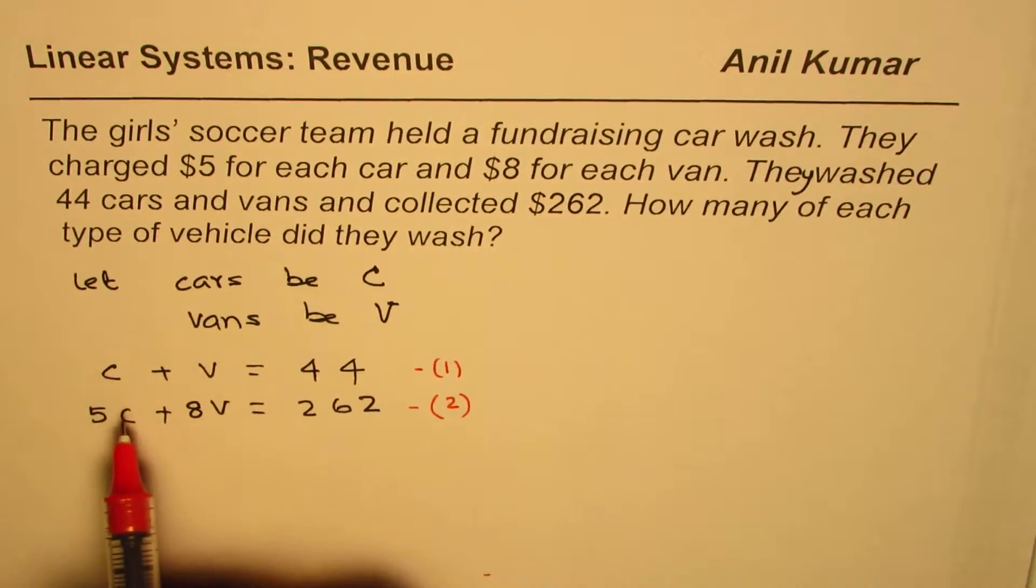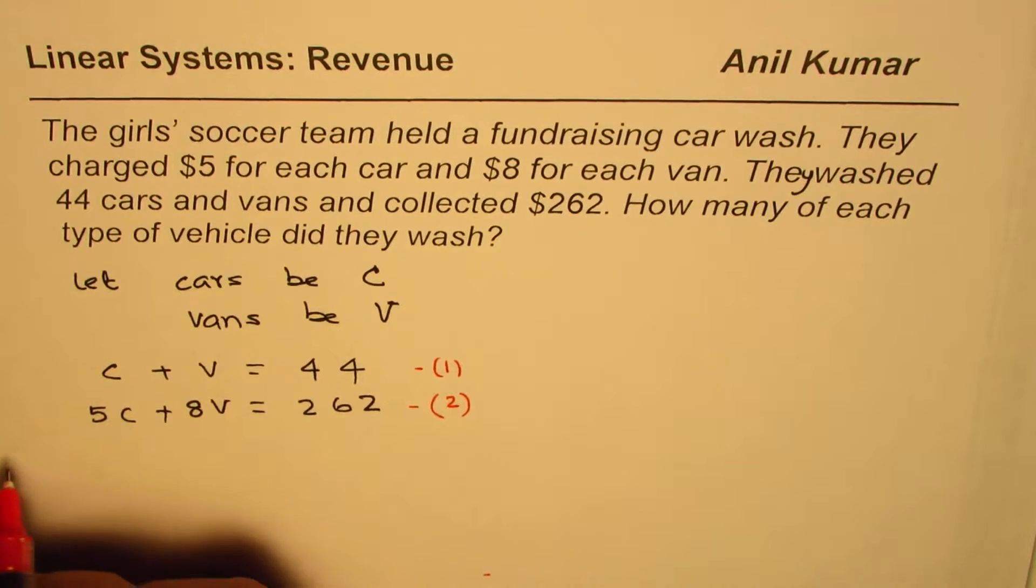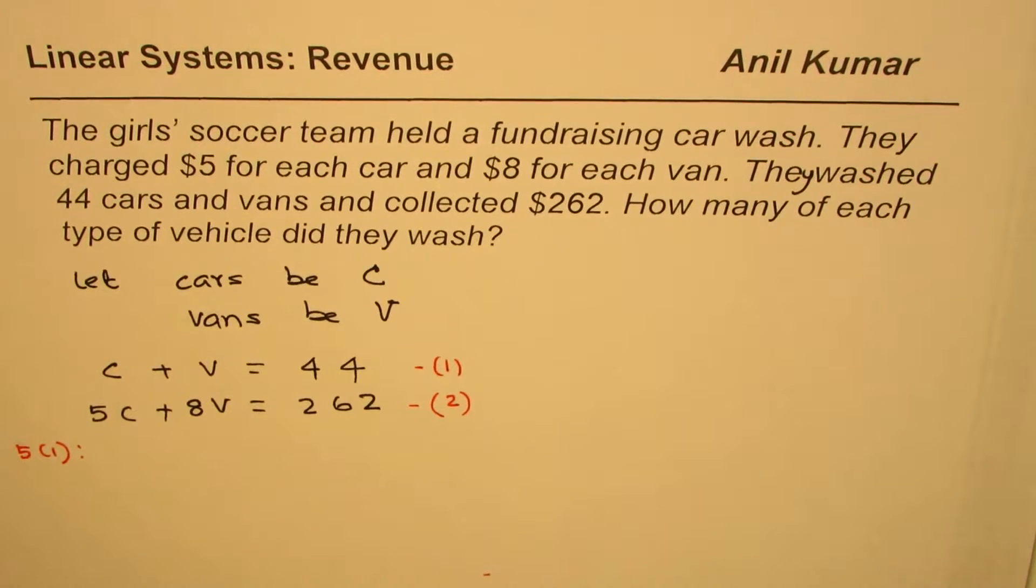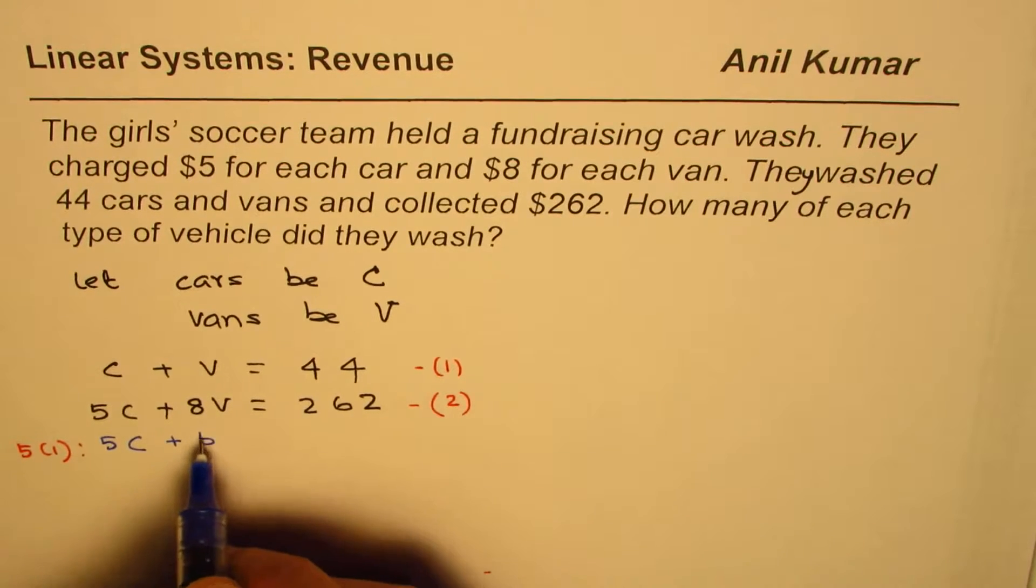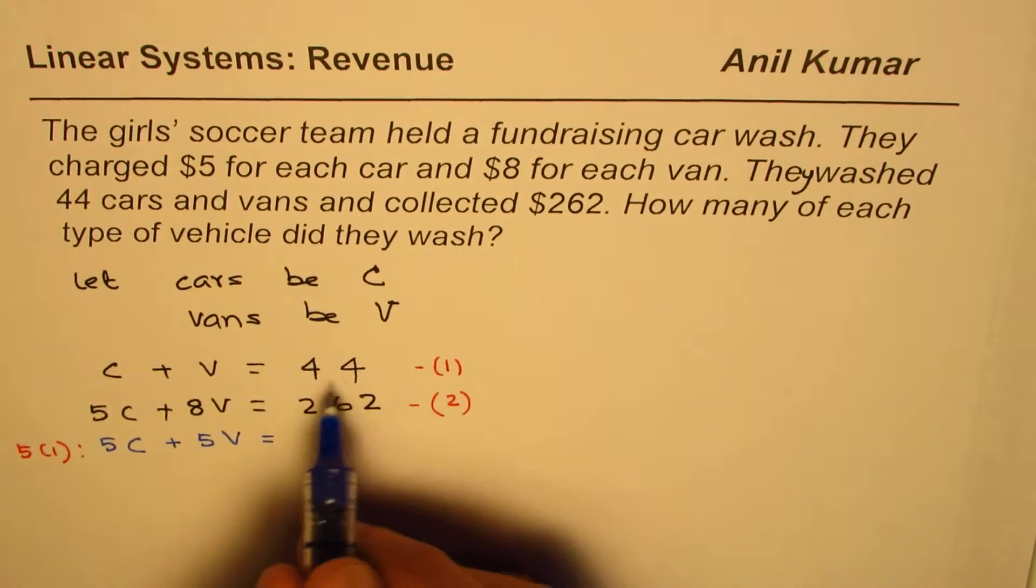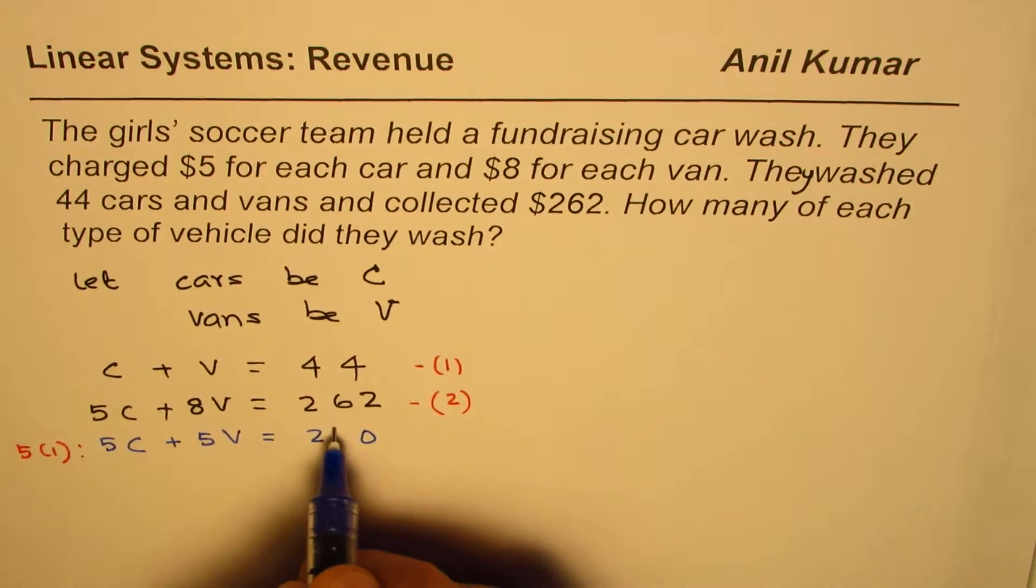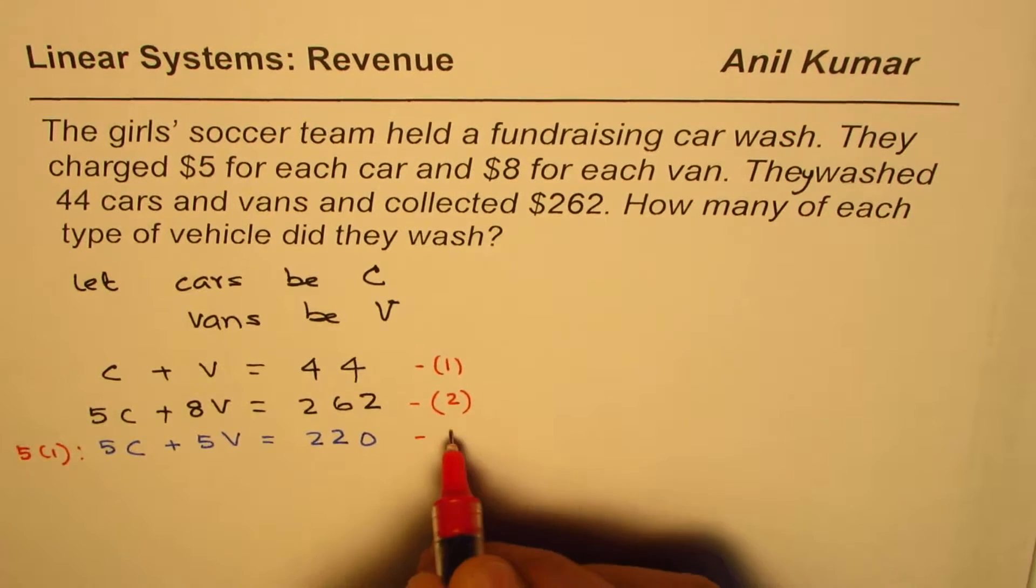To eliminate, let's make the coefficients of C the same. Multiply the first equation by 5, and we get 5C plus 5V equals 220 (44 times 5). You can always use a calculator in solving such questions.